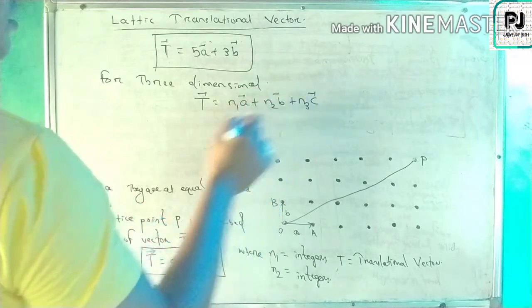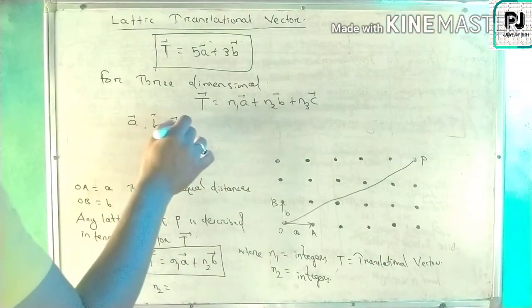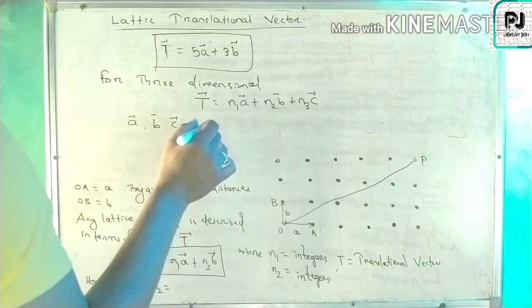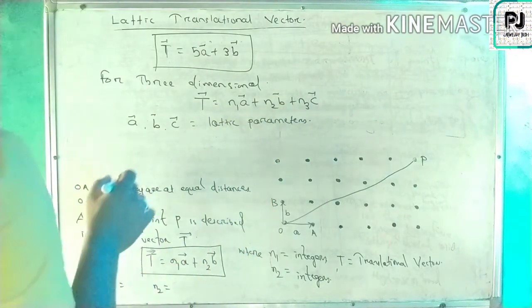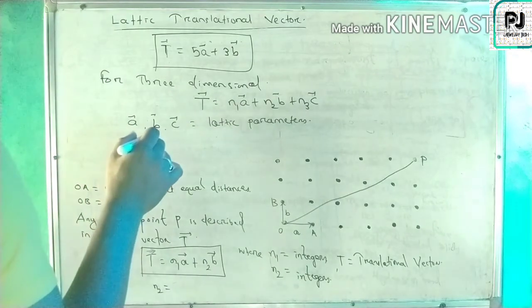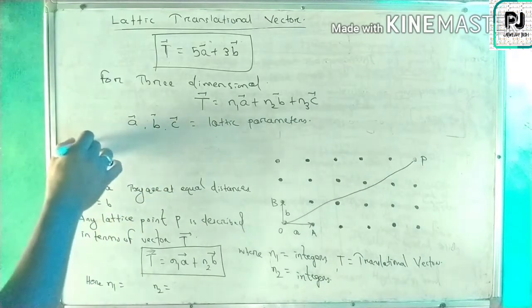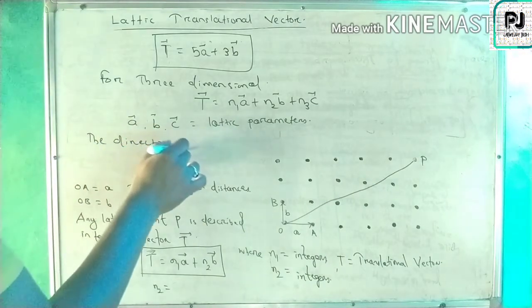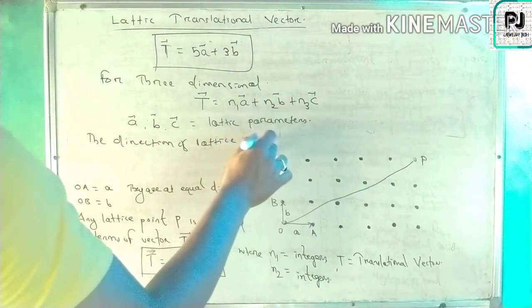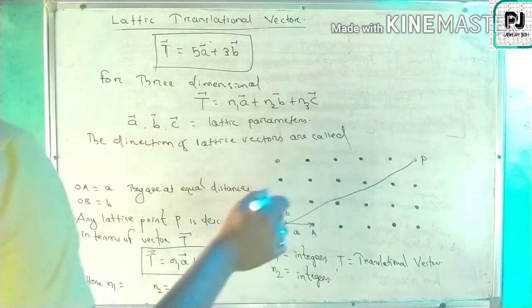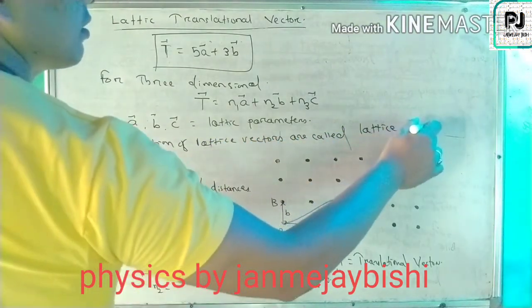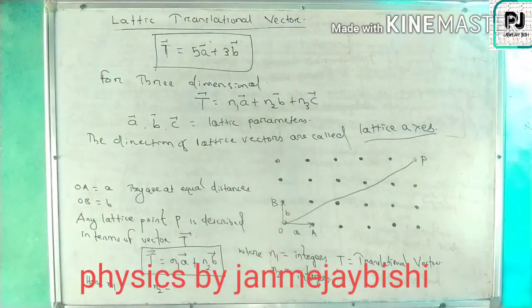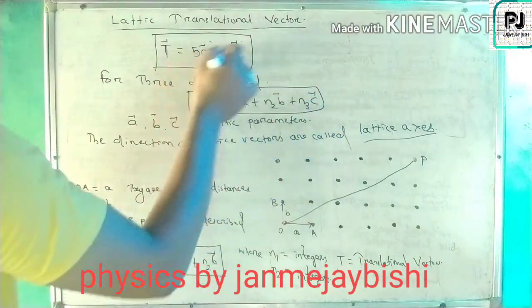Here a-vector, b-vector and c-vector are called the lattice parameters. The direction of the lattice vectors is called the lattice axis or crystalline axis. This is the lattice translational vector for the three-dimensional case, and T = n1·a + n2·b was for the two-dimensional case.